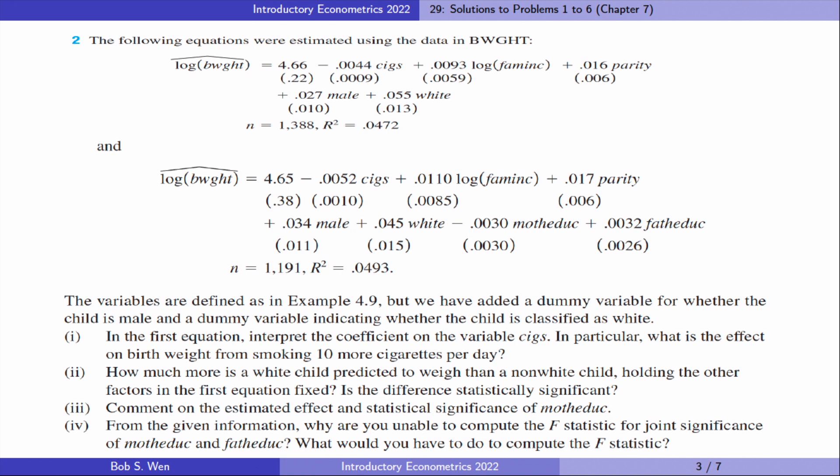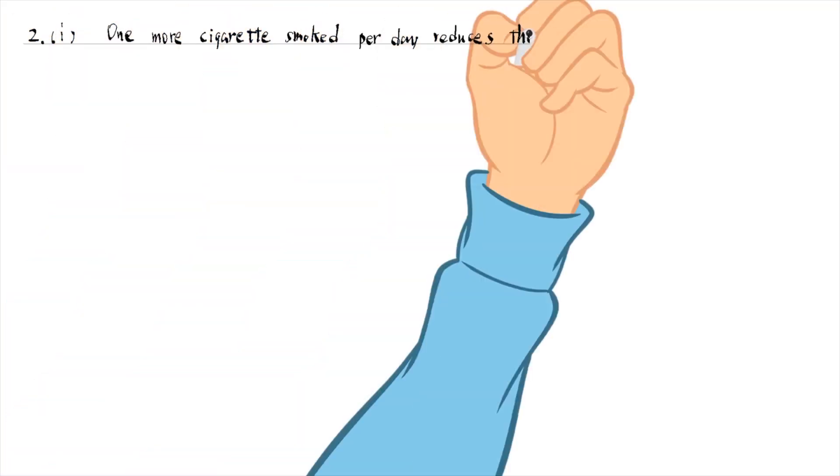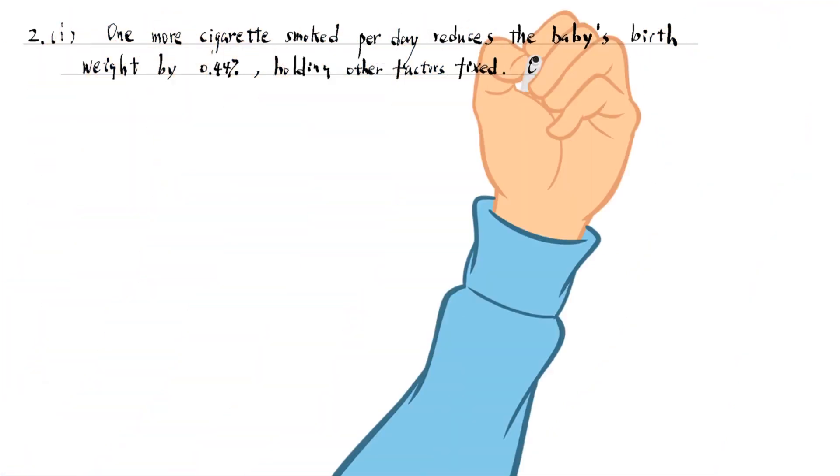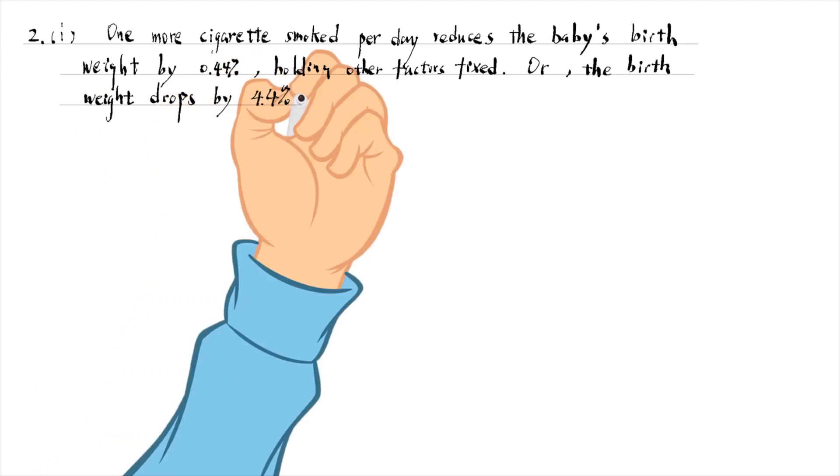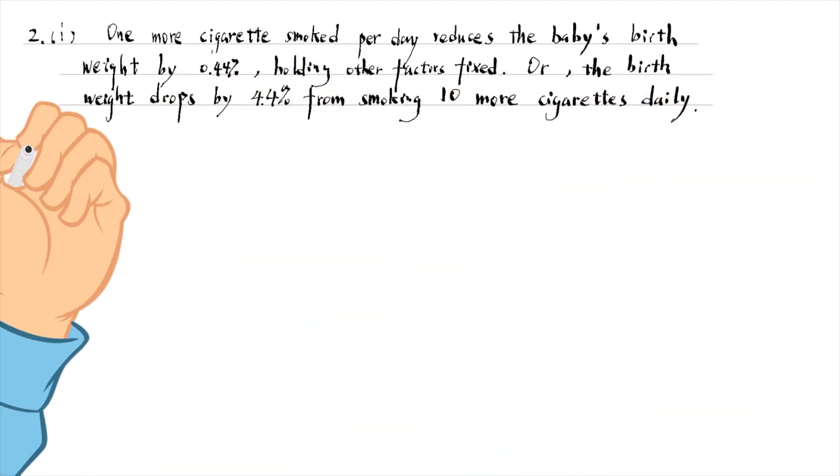Let's do the second problem. It is about birth weight. In part one, we find that one more cigarette smoked per day reduces the baby's birth weight by 0.44%, holding other factors fixed. In other words, the birth weight drops by 4.4% from smoking 10 more cigarettes daily. The effect is statistically significant at the 1% level with a t-statistic of minus 5.11.